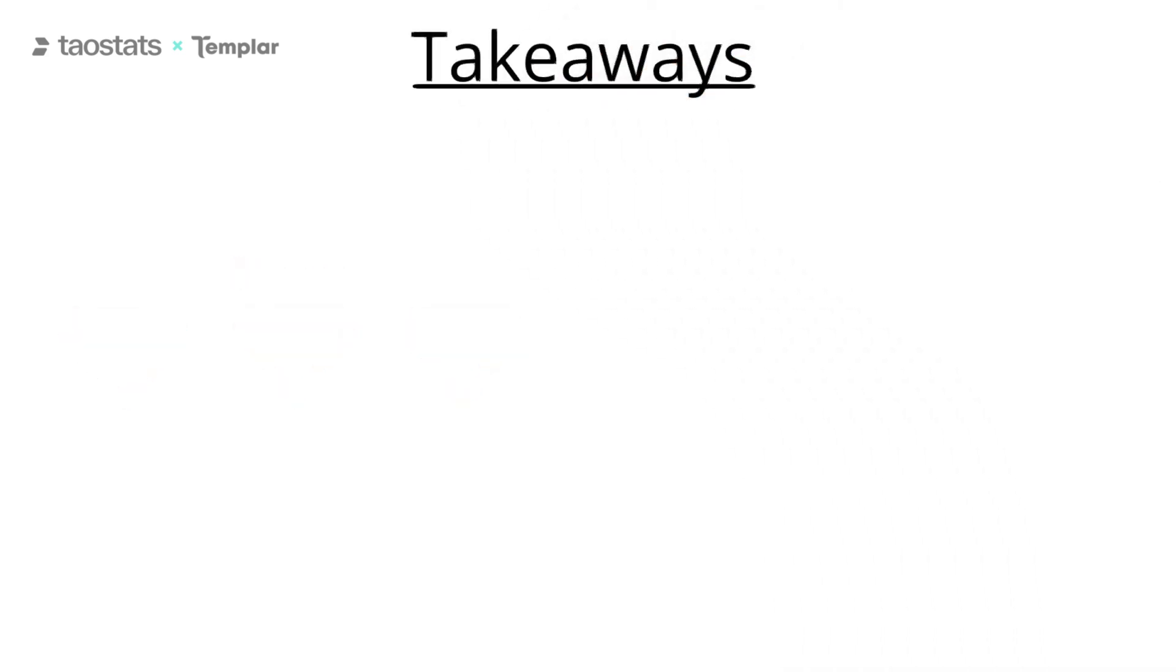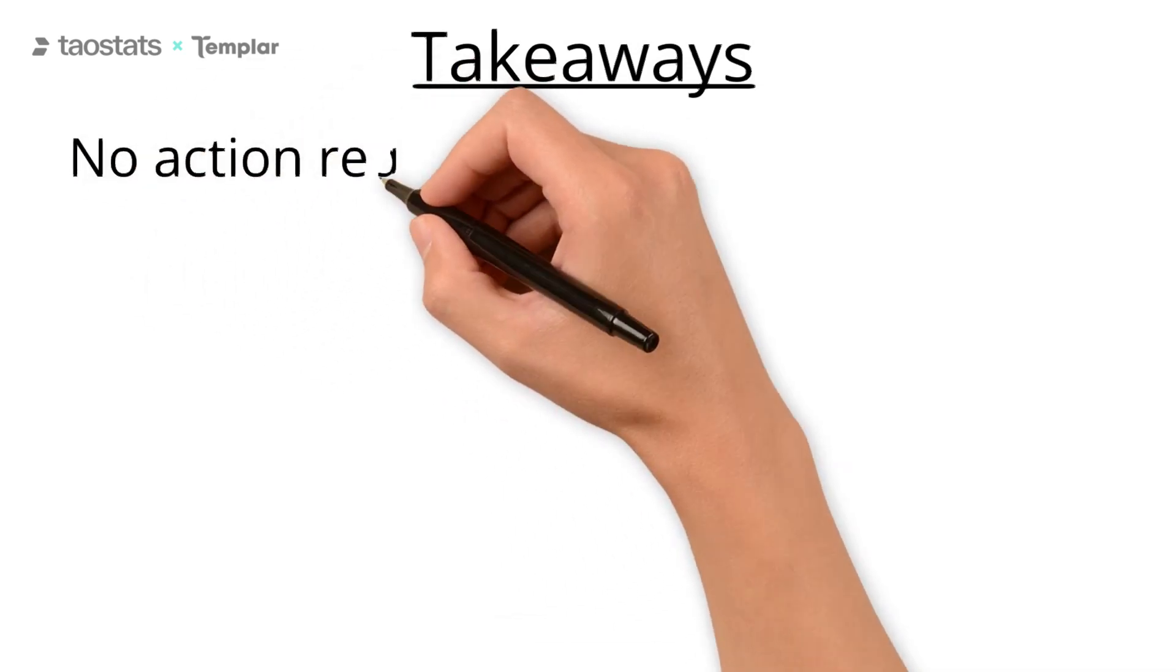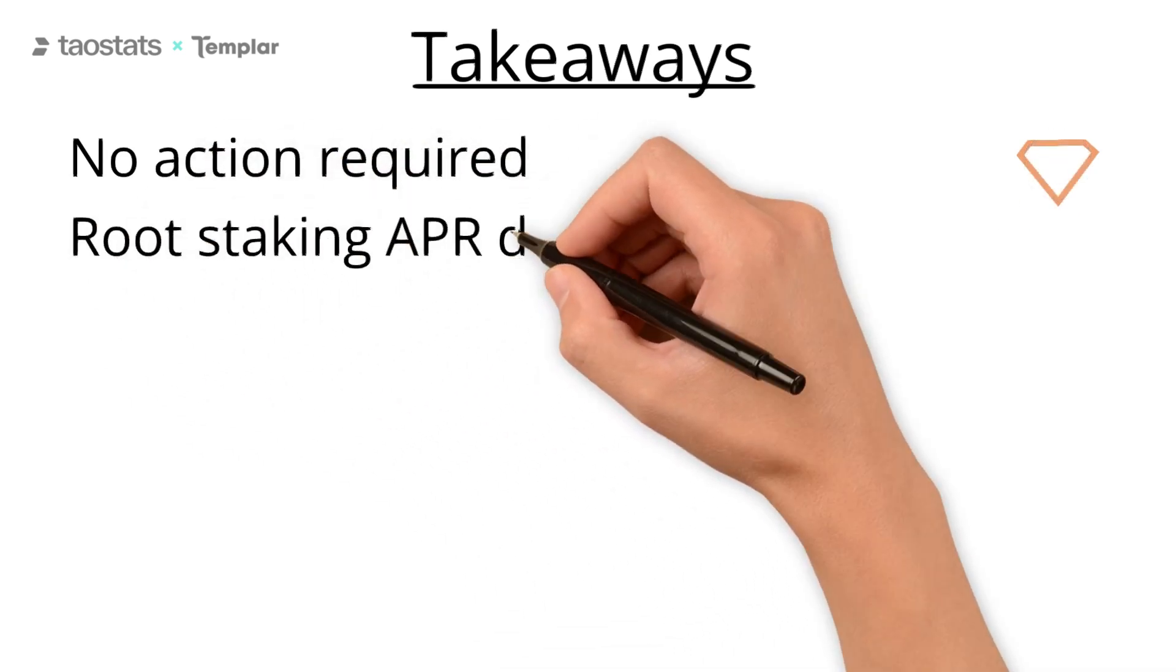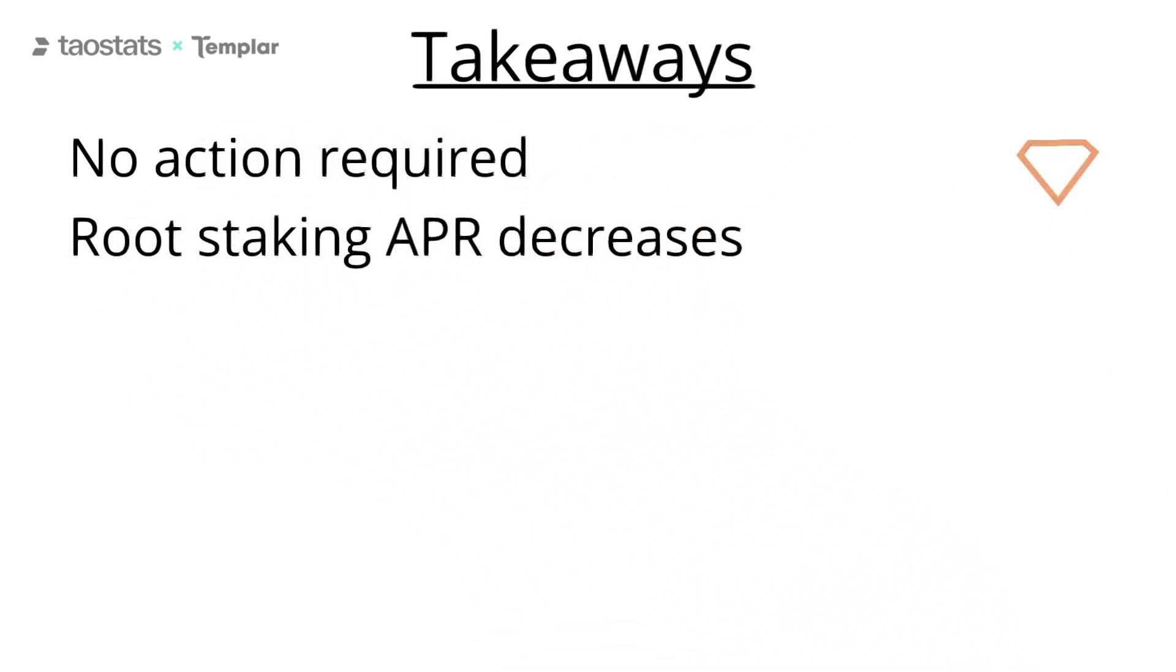When dynamic Tau goes live, you do not have to do anything. Your Tau will stay root staked to subnet 0. You will continue to receive dividends in Tau. Over time, if you do nothing, the amount of dividends you receive will start to decrease.